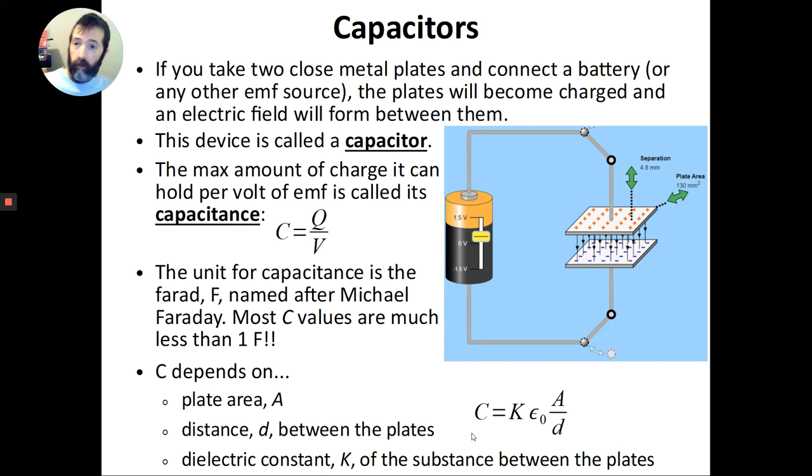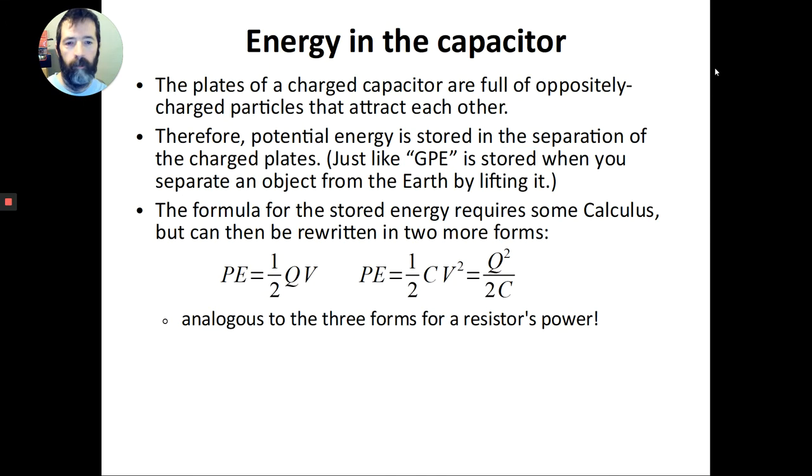And you may remember with resistors, we had the definition of resistance, which was V over I volts per amp. But then we also had a formula for resistors about like how long is the resistor? How wide is it? What's the resistivity of the material it's made of? So those two separate resistor equations are very similar to these two separate capacitance equations. One of them is about how it works. The other one is about how it's like made physically.